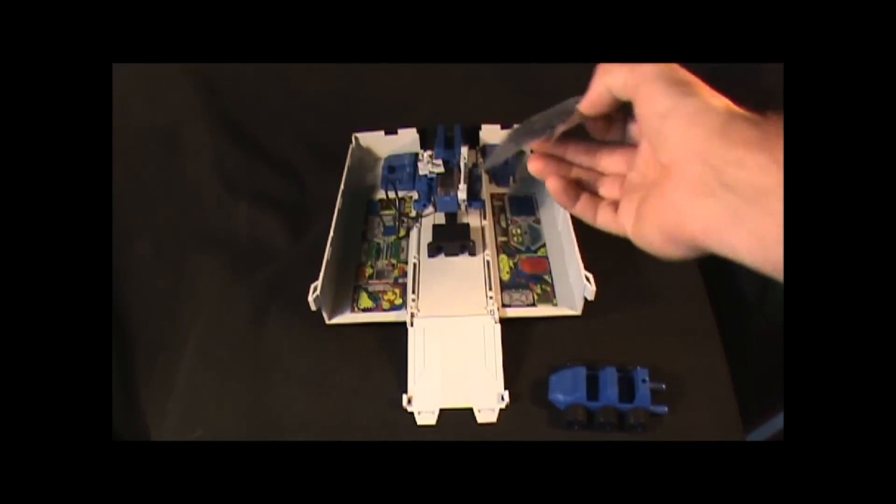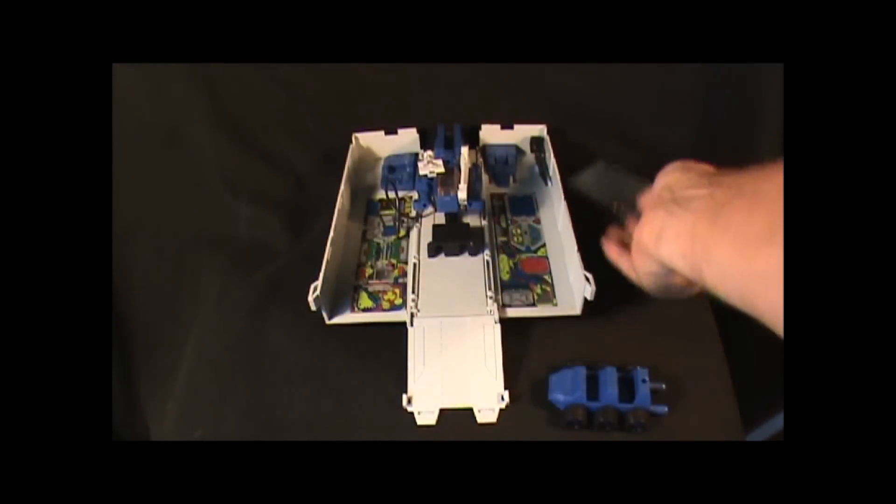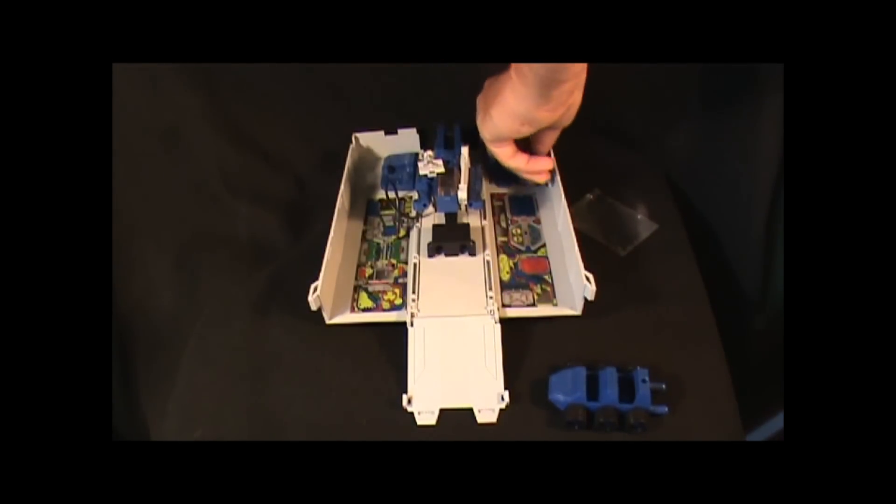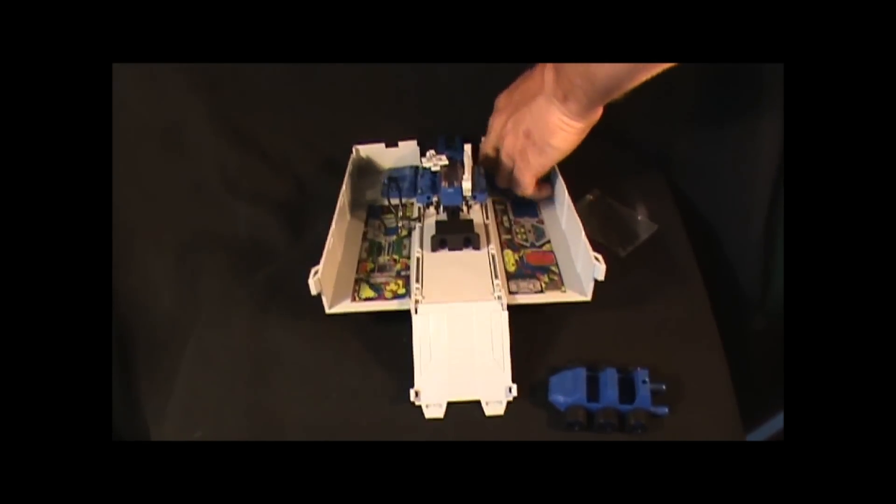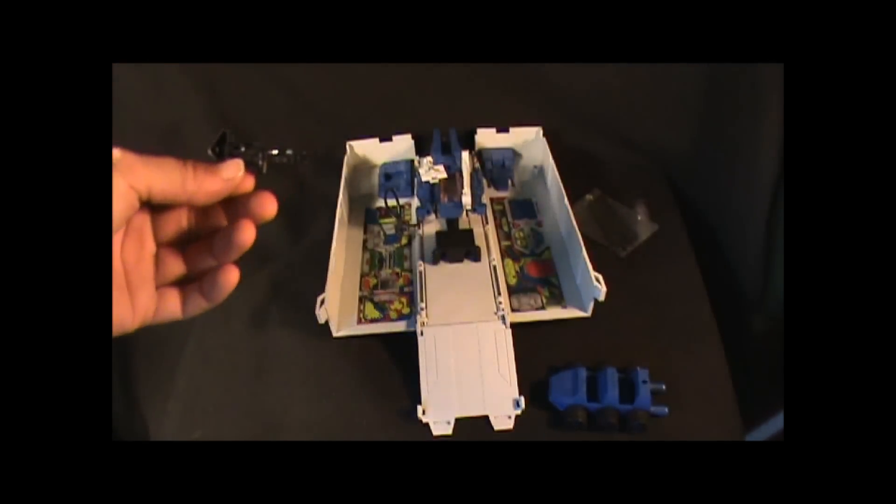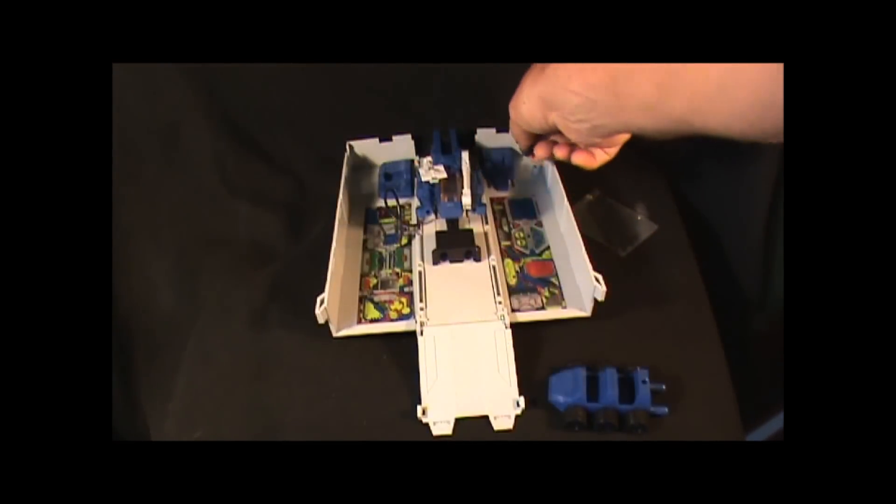And as you can see, I still got the missiles in here. Not going to open them. And you got Optimus's gun right here. It stores right here in this little peg hole.